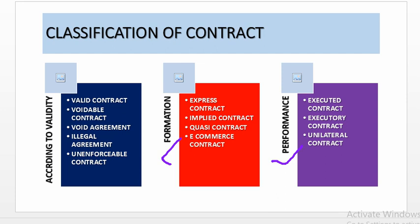On the basis of formation: express contract, implied contract, quasi contract, and e-commerce contract. On the basis of performance, it may be executed, executory, unilateral contract, or bilateral contract.